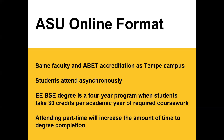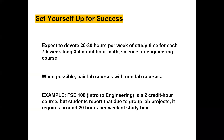This degree is a four-year program when students take 30 credits per academic year of required coursework. If you have transferable coursework, this may be less time, but attending part time will increase time to degree completion. Expect to devote 20 to 30 hours per week of study time for each seven-and-a-half-week, three or four credit hour math, science, or engineering course. When possible, pair lab courses with non-lab courses. For example, FSE 100 (Introduction to Engineering), a two credit hour course, has been reported to take about 20 hours per week due to group lab projects. Engineering requires you to devote more time than many other majors at ASU.